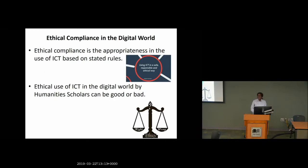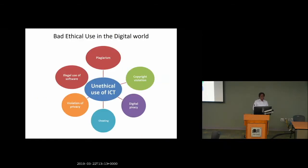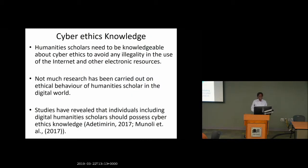A humanities scholar could use information resources ethically or otherwise. This slide portrays the different bad ethical uses in the digital world, including plagiarism, copyright violation, illegal use of protection, illegal use of software, violation of privacy, and digital piracy. It is important that the humanities scholar should be abreast of cyber ethics knowledge, meaning they are knowledgeable in the appropriate use of these resources while carrying out their functions.